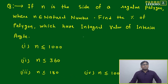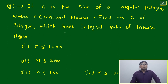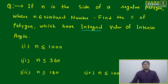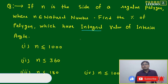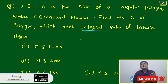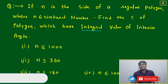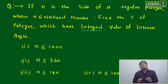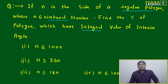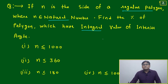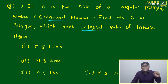This question is explorative in nature. If n is the side of a regular polygon where n belongs to natural numbers, find the percentage of polygons which have an integral value of interior angle. This doesn't require deep math knowledge — anyone who has passed 12th grade knows what a regular polygon is, what a natural number is, and what an integral interior angle is. The challenge is whether you can mark the correct answer with minimal effort and time.